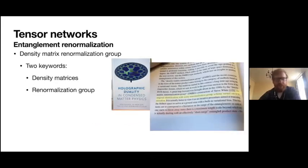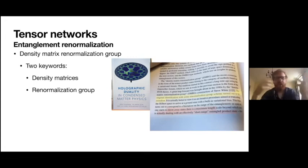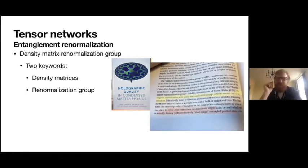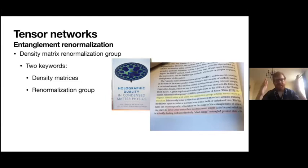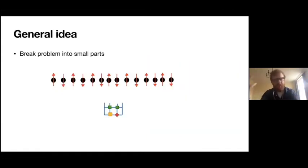I like to start by talking about this book on my shelf. They make something of a misidentification. There are really two keywords in the density matrix renormalization group: density matrices, and the renormalization group. In this book, they say the original identification with some renormalization group turned out to be mistaken. But they overstep by saying that, and then shoot themselves in the foot in the next couple of lines — saying they throw away states where there's a maximum length scale, dealing with an effective short-range entangled product. If you know a little about the renormalization group, you're essentially establishing some cutoff over which the theory is valid. So they've undermined their own statement.